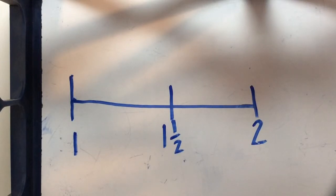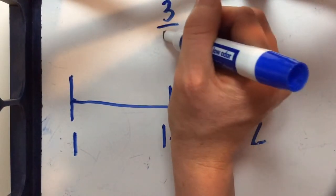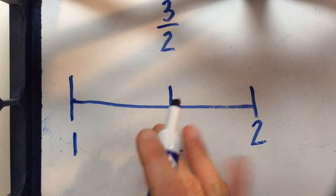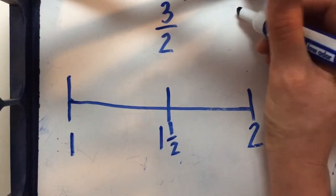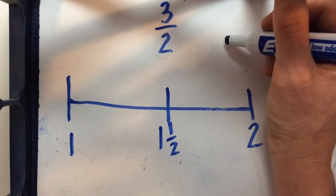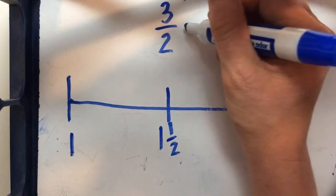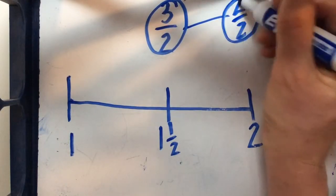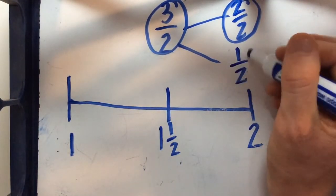So let's go ahead and plot our first improper fraction which is 3 halves. Now if we need we can always break our improper fractions down or decompose them so that we know how much more we need to go up from the whole. So I know that 3 halves is the same as 2 halves, that would be my whole, plus another 1 half.